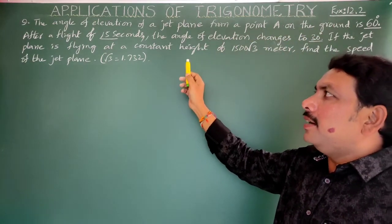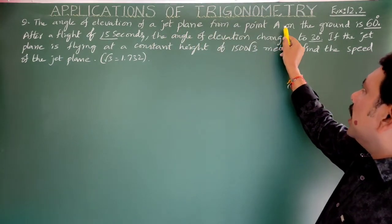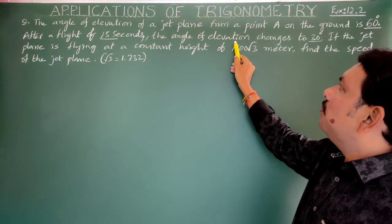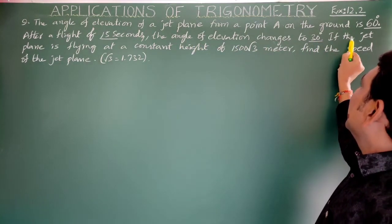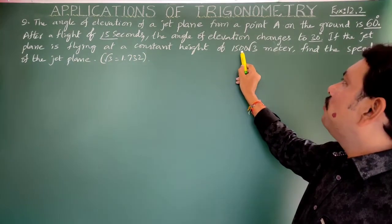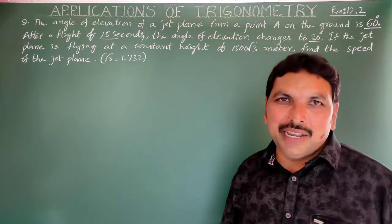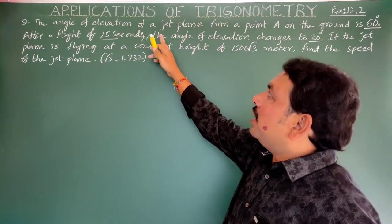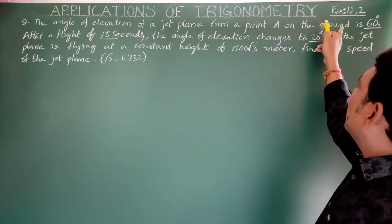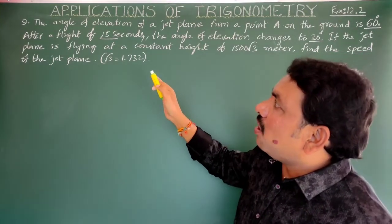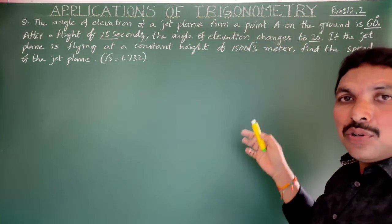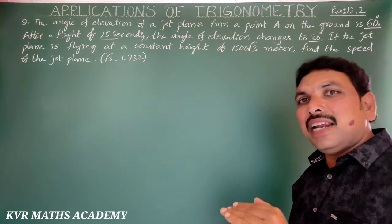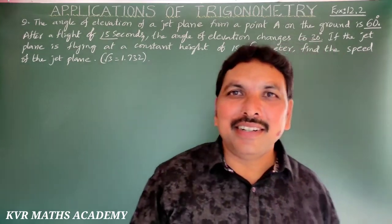Next problem: the angle of elevation of a jet plane from a point A on the ground is 60 degrees. After a flight of 15 seconds, the angle of elevation changes to 30 degrees. If the jet plane is flying at a constant height of 1500√3 meters, find the speed of the jet plane.